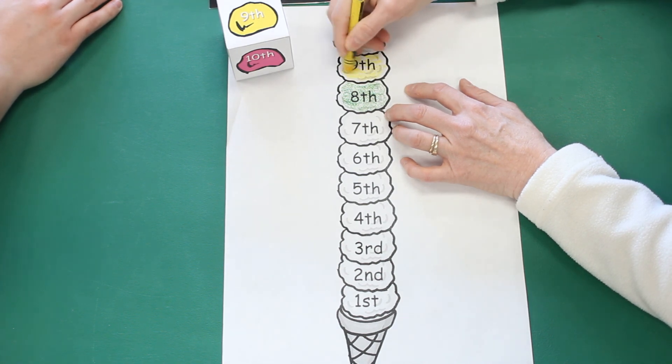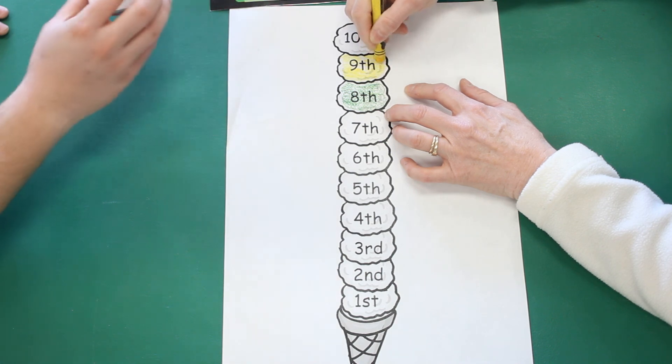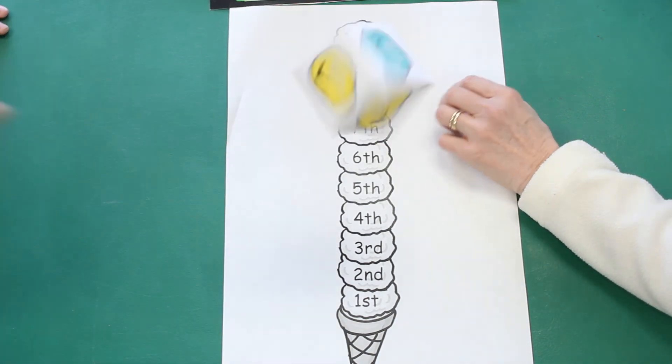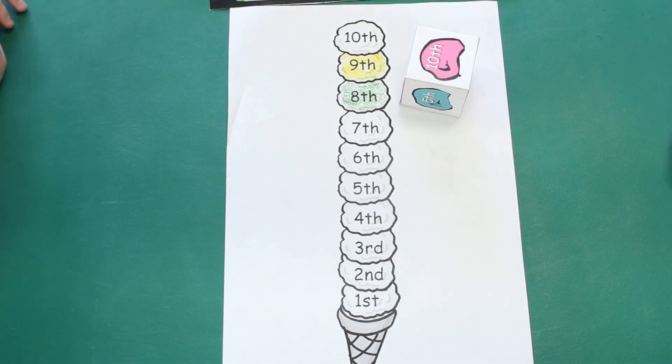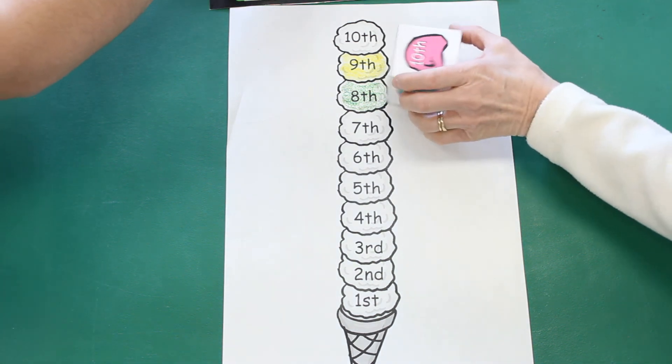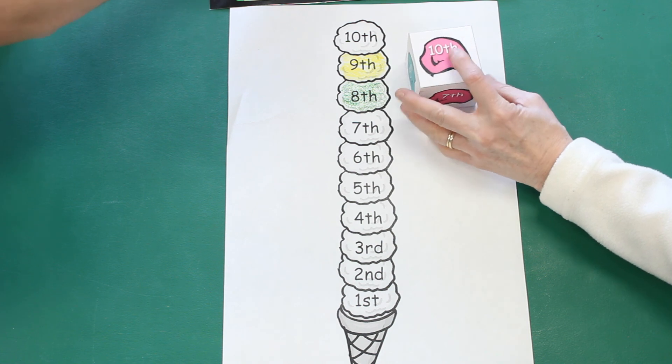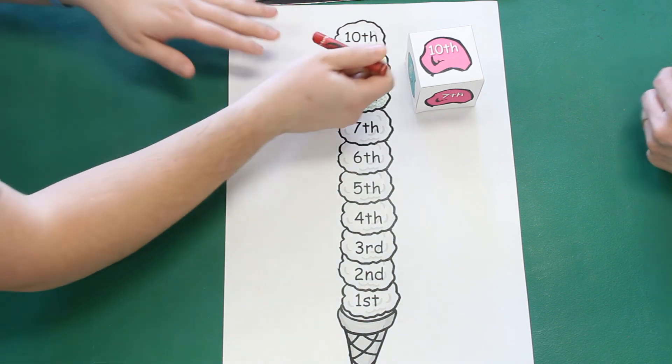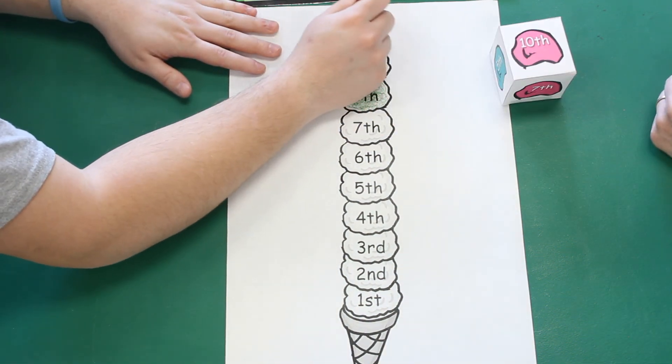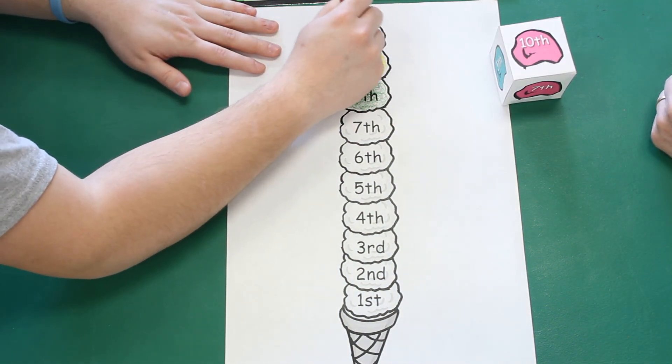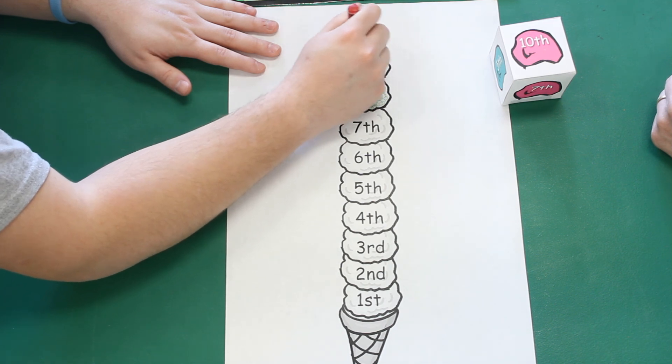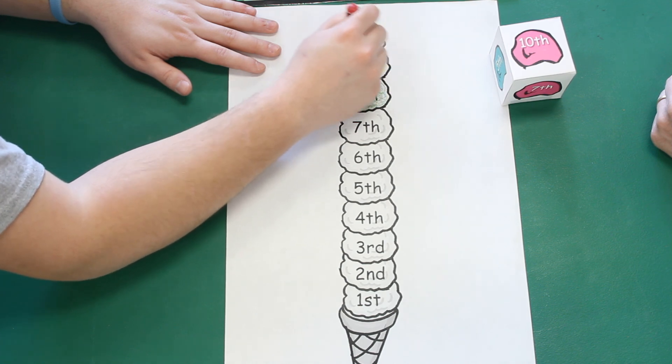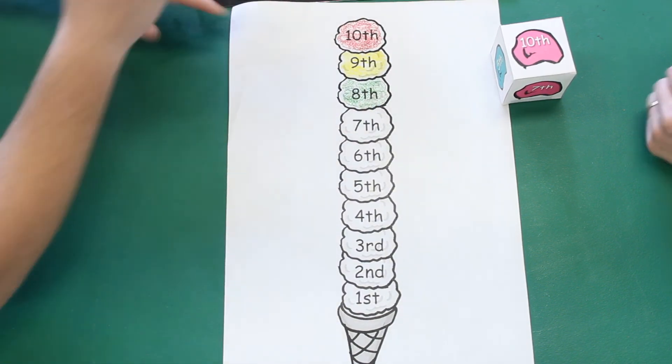All right, Ethan, it's your turn. Oh, I got the tenth. Ethan got tenth. The tenth scoop of ice cream. What color are you going to color that, Ethan? I'm going to color it red. Red. Awesome. And there it is.